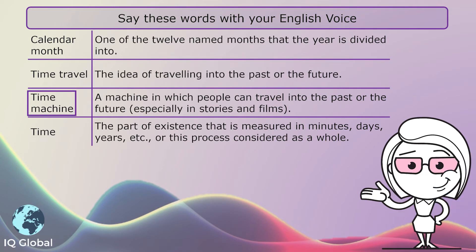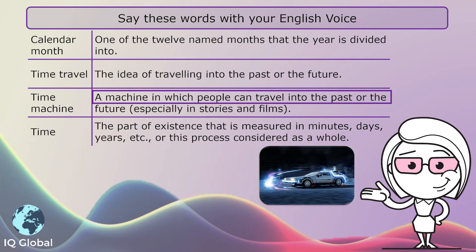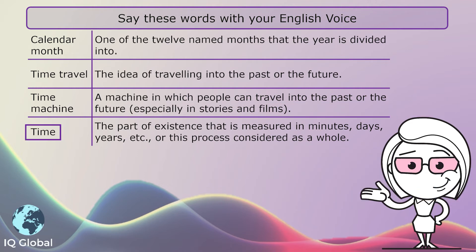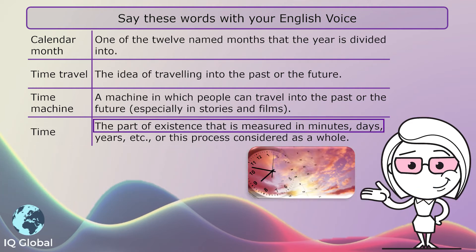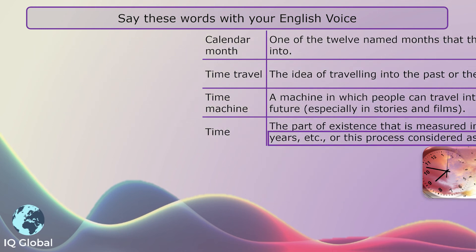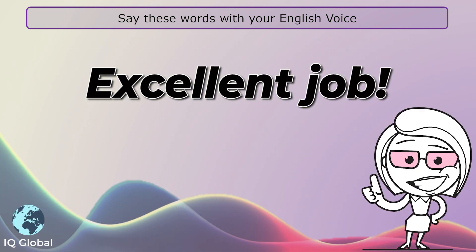Time machine: a machine in which people can travel into the past or the future, especially in stories and films. Time: the part of existence that is measured in minutes, days, years, etc., or this process considered as a whole. Thank you.